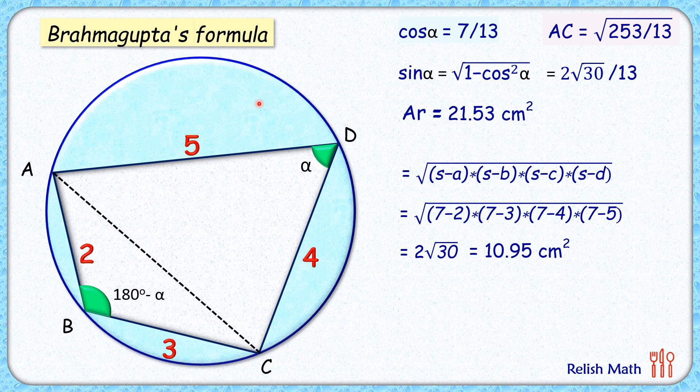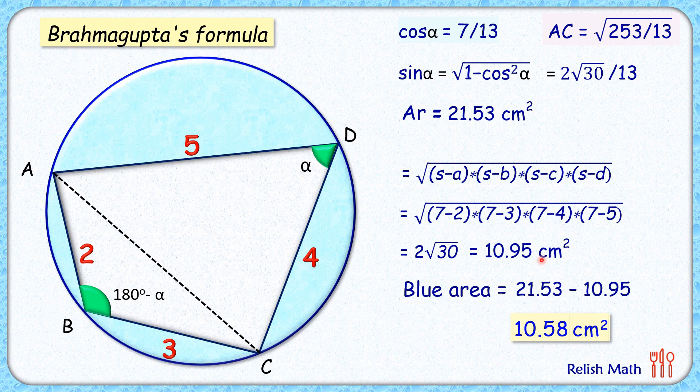Now that we have got the area of this full circle and area of this cutout quadrilateral, we can get the remaining blue area as the difference between these two, which is nothing but 10.58 cm squared. And that's our answer. I hope you enjoyed the solution. I will see you in the next video. Till then, tata, bye bye.